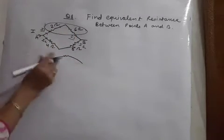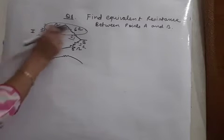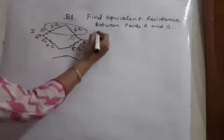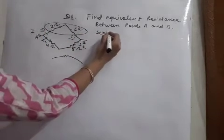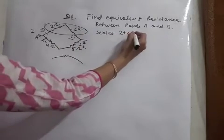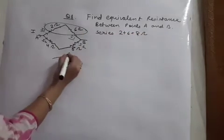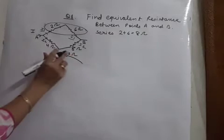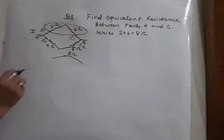So what we will do? We will replace them by a single resistance. In series, the resistance is obtained by direct addition. So 2 plus 6, 8 ohm. The answer for the upper branch is 8 ohm.